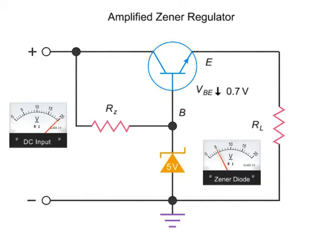Keeping in mind the rule of 0.7, we can determine that the output voltage at the emitter will be 0.7 volts less than the voltage at the base, or 4.3 volts.